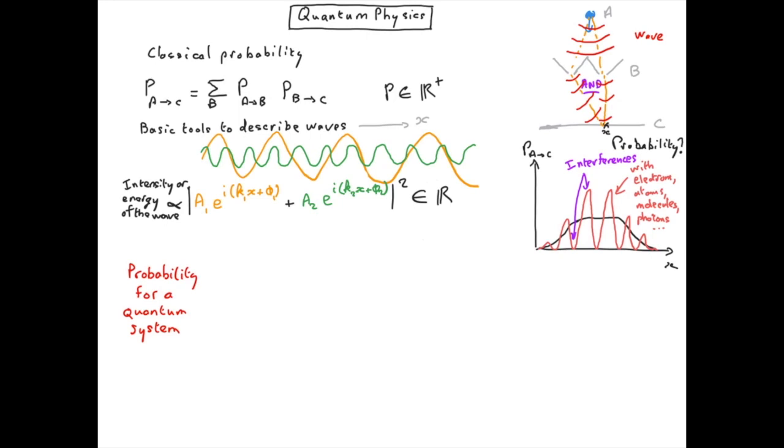So our probability is a positive real number and we can treat it as the analogous of the intensity for a wave.